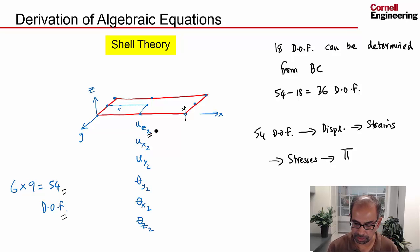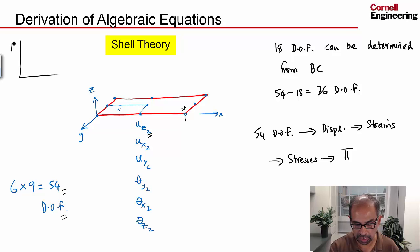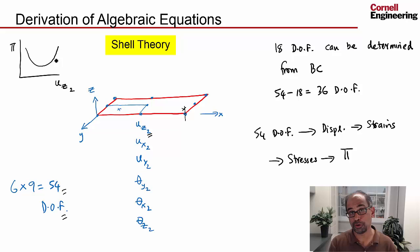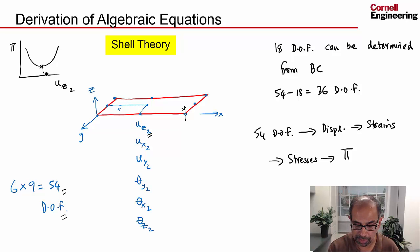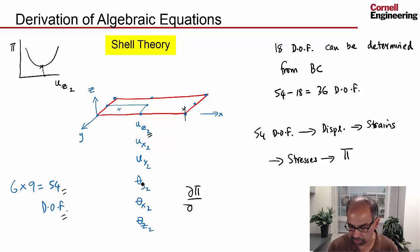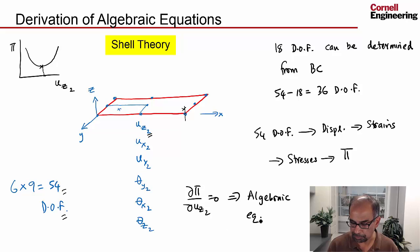For instance, let's look at a particular degree of freedom — how much a node is going to move normal to the surface. If I look at the variation of the potential energy versus that particular degree of freedom, holding everything else the same, the potential energy variation has a minimum. We're interested only in that minimum point, where the structure is in equilibrium. We find it by setting the derivative of potential energy with respect to uz2 equal to zero, and that gives us an algebraic equation relating the degrees of freedom at neighboring nodes.